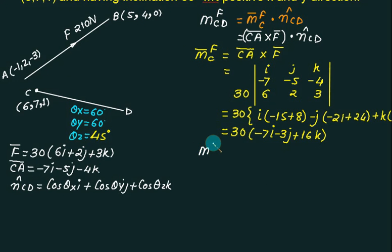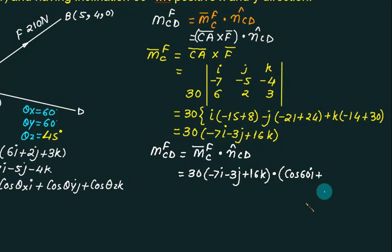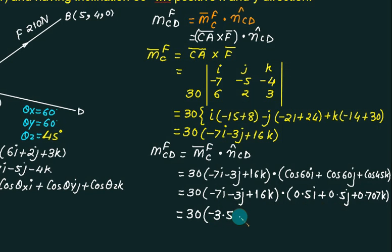Moment of force about line CD equals moment of force about C dot product with unit vector CD. So we take 30 times (minus 7i minus 3j plus 16k) dotted with (cos 60 i plus cos 60 j plus cos 45 k). In the dot product: minus 7 times 0.5 is minus 3.5; minus 3 times 0.5 is minus 1.5; and 16 times 0.707 gives the final term.